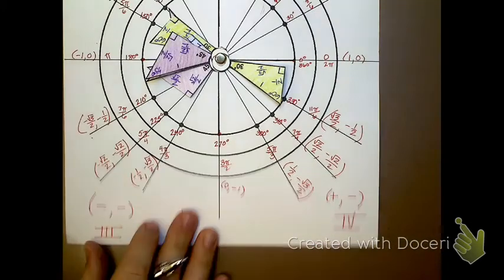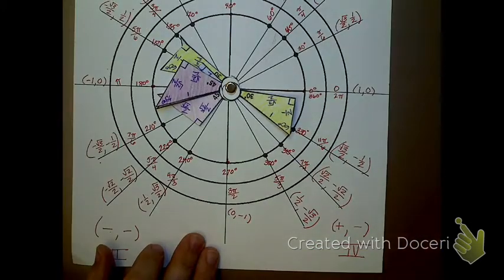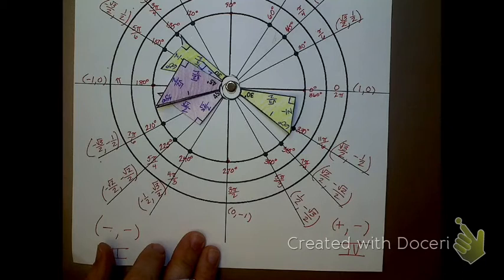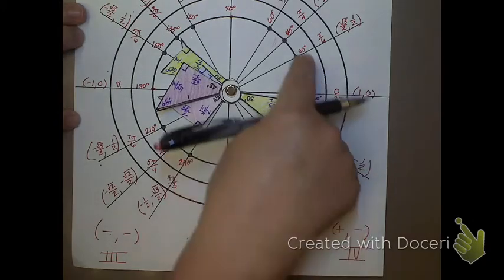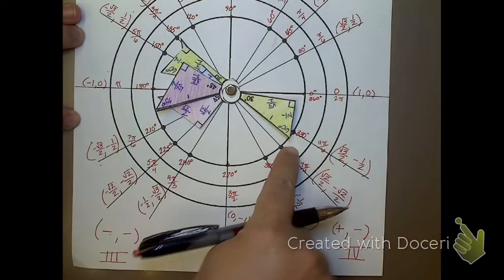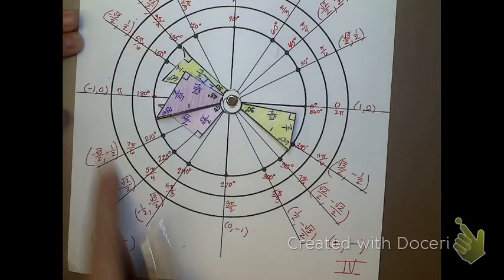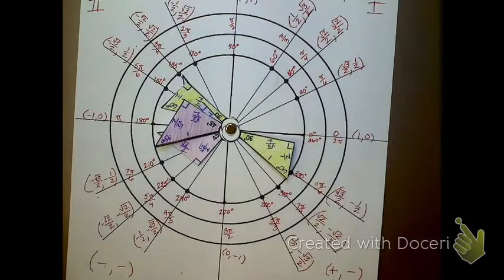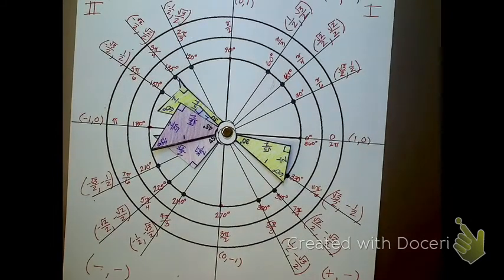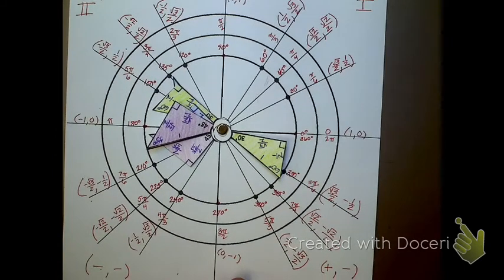So when you take your unit circle quiz, which is next Friday, you have block schedule every day next week except Friday, and Friday you're going to be taking your unit circle quiz. You're going to need to start off by filling in all of the degrees, and then you'll fill in all of the radians, and then you're going to fill in all of the coordinates. Now, the coordinates look really confusing, but really they're the same numbers being used over and over again.